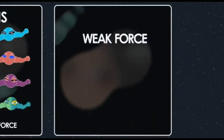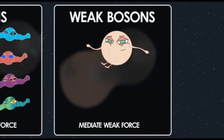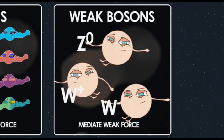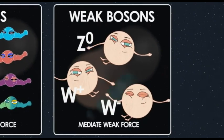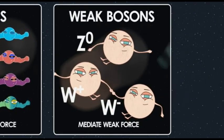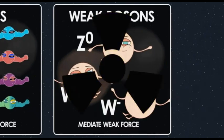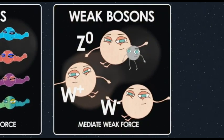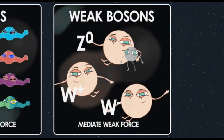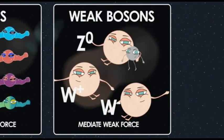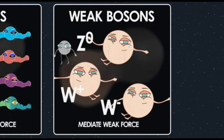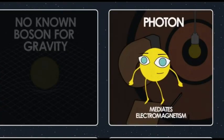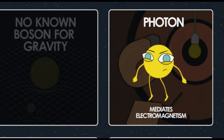The weak nuclear force is carried by three particles: the Z-naught and the W-plus and W-minus. The weak nuclear force is responsible for certain kinds of particle decay, and it's also the only force that neutrinos feel, aside from very weak gravity. So there are three bosons for the weak force, eight for the strong force, and one for electromagnetism — that's 12 bosons total.